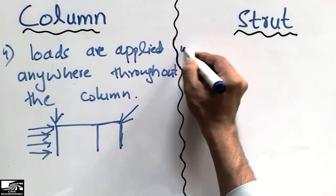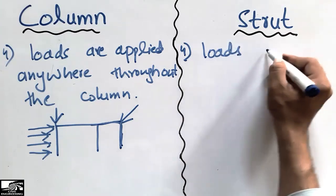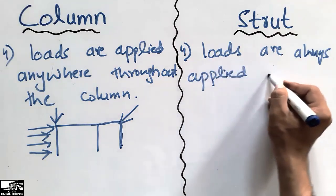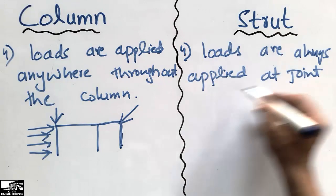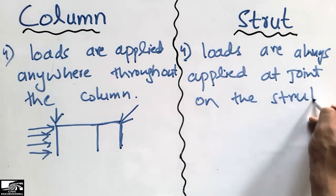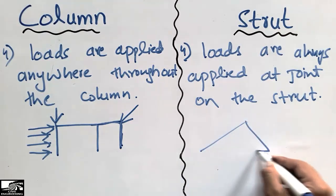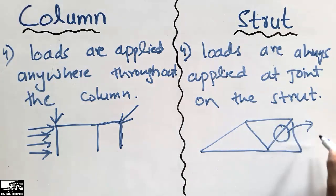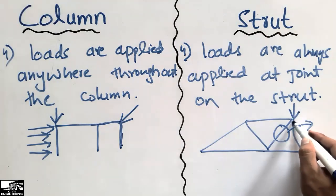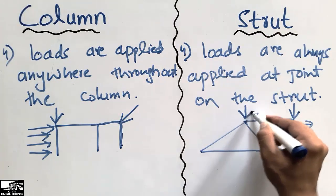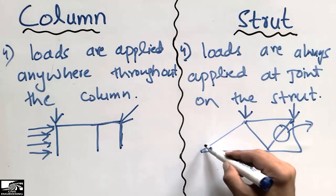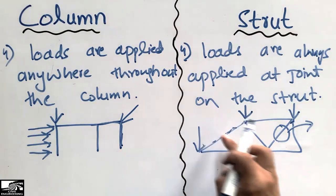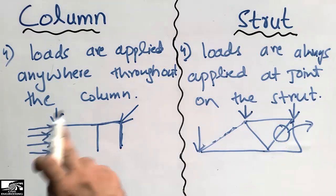While in the case of the strut, the loads are always applied at the joints of the strut. For example, in a truss, these are the strut members, and the loads are always applied at the joints. You cannot apply a load in the middle of a strut — it is always applied at the joint of the strut. This is the fourth difference between the column and the strut.